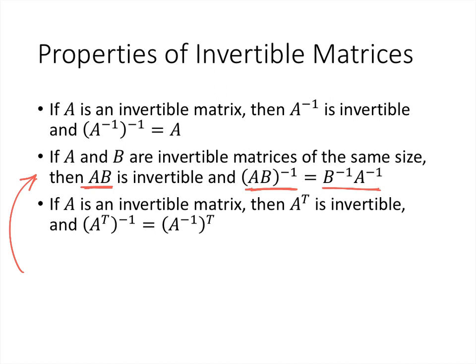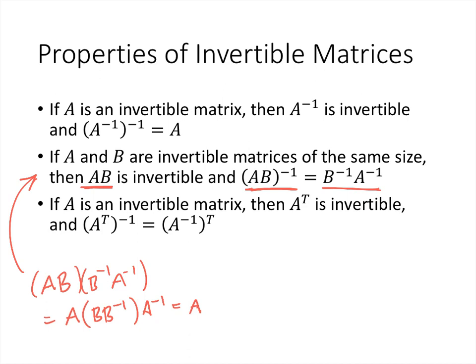The reason the order changes is that matrix multiplication is not necessarily commutative — AB doesn't have to equal BA. Taking AB and multiplying by B inverse A inverse, we can regroup to get B times B inverse on the inside, giving the identity. Multiplying by the identity doesn't do anything, and we get I. Similarly, putting B inverse A inverse on the other side also gives the identity. It has to be in that order — B inverse A inverse — writing A inverse B inverse wouldn't work.